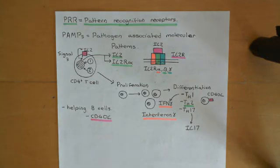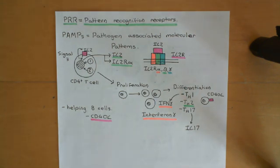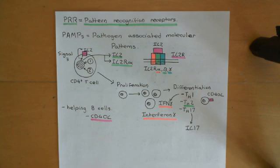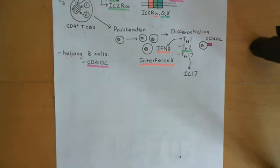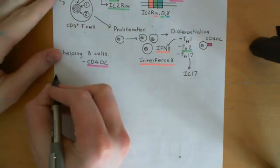Welcome back to this next video in which we are discussing asthma and anti-asthmatic drugs. We've now discussed the allergic adaptive immune response that occurs to allergens in both atopic and non-atopic forms of asthma. We now want to look at the additional adaptive immune response that occurs only in atopic forms of asthma.